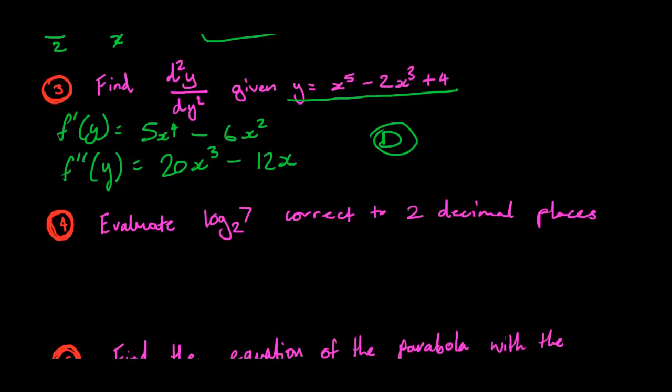Let's move on to the next one. Evaluate log₂7, correct to two decimal places. Now, this one isn't so hard. If you remember the change of base rule, that's basically all we're going to do right now. Log₂7 equals log 7 over log 2. As simple as that. Now all you have to do for that is shove it straight into your calculator, and you should get 2.81.